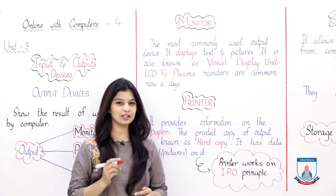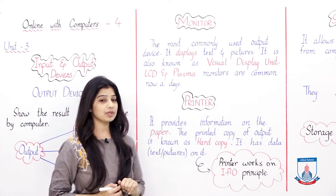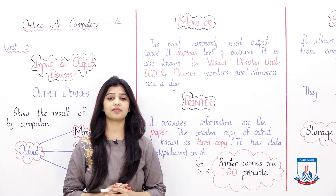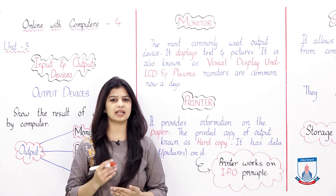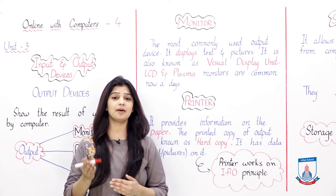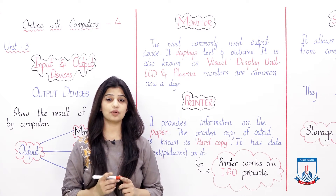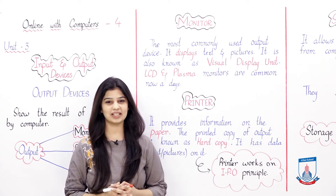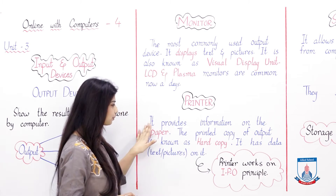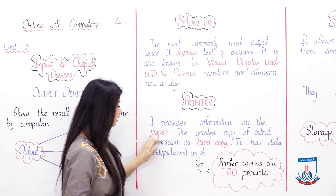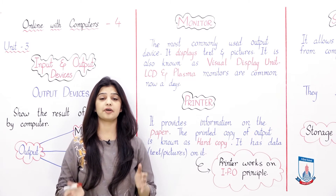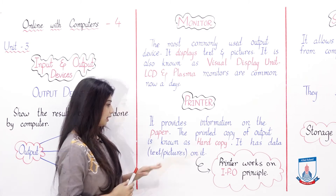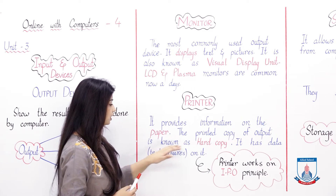The next output device is the Printer. First of all, let's see what the printer is. Our files which are saved on the computer — text files or pictures — we can print them on paper. It provides information on paper. This is an output device which gives you output on paper. The printed copy of output is known as a hard copy.